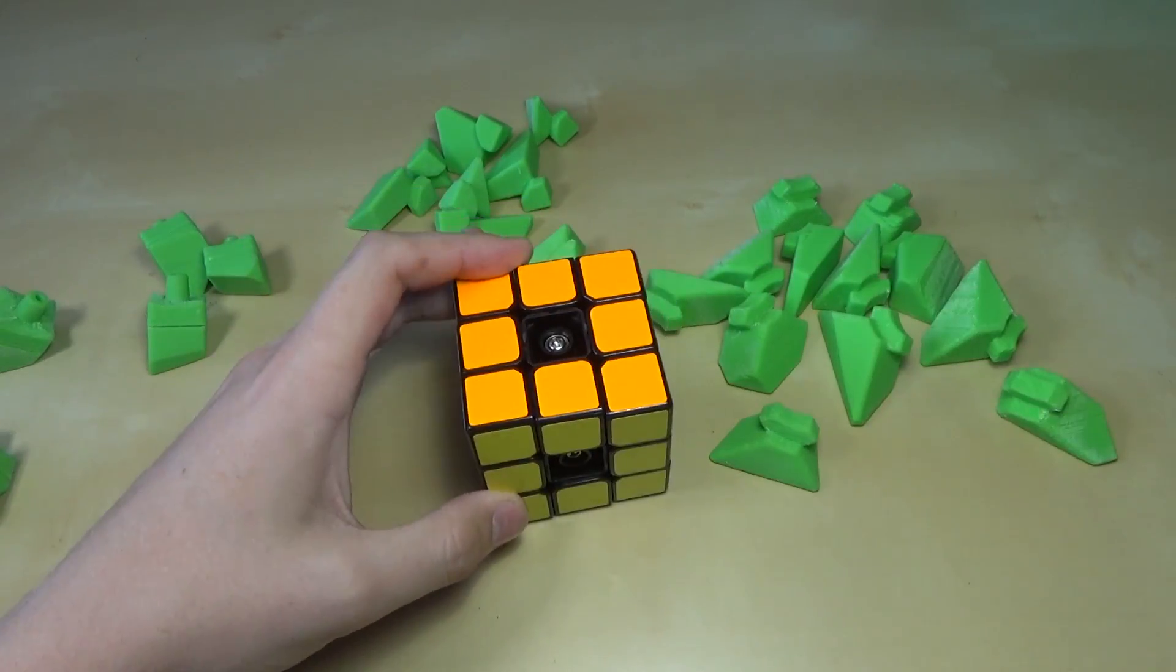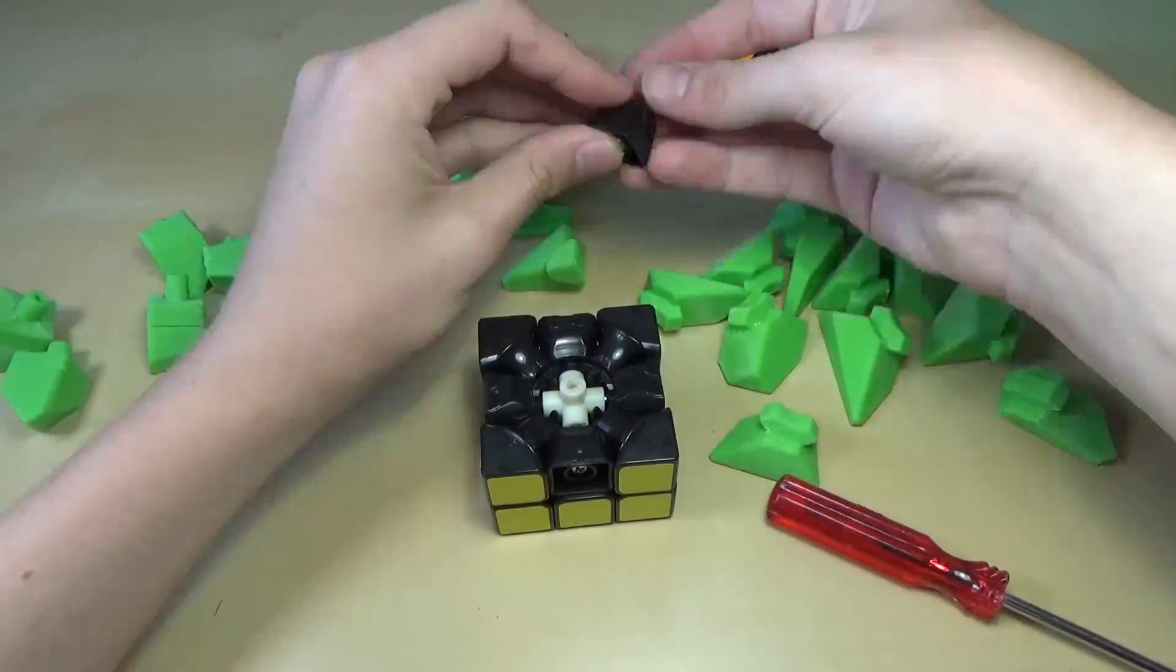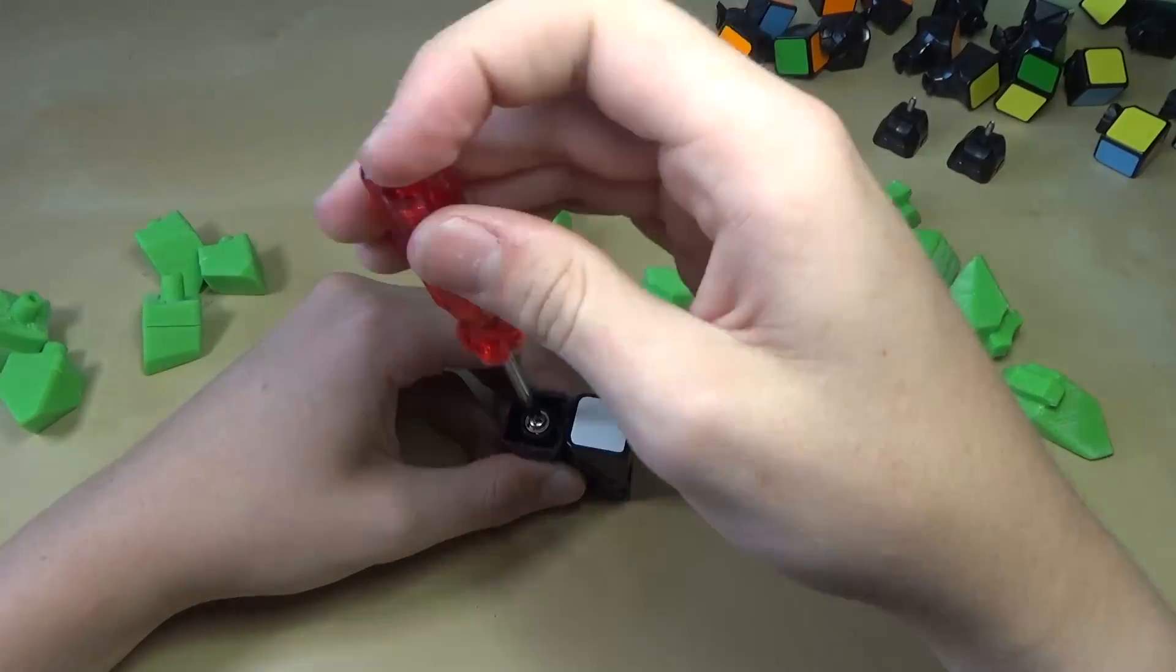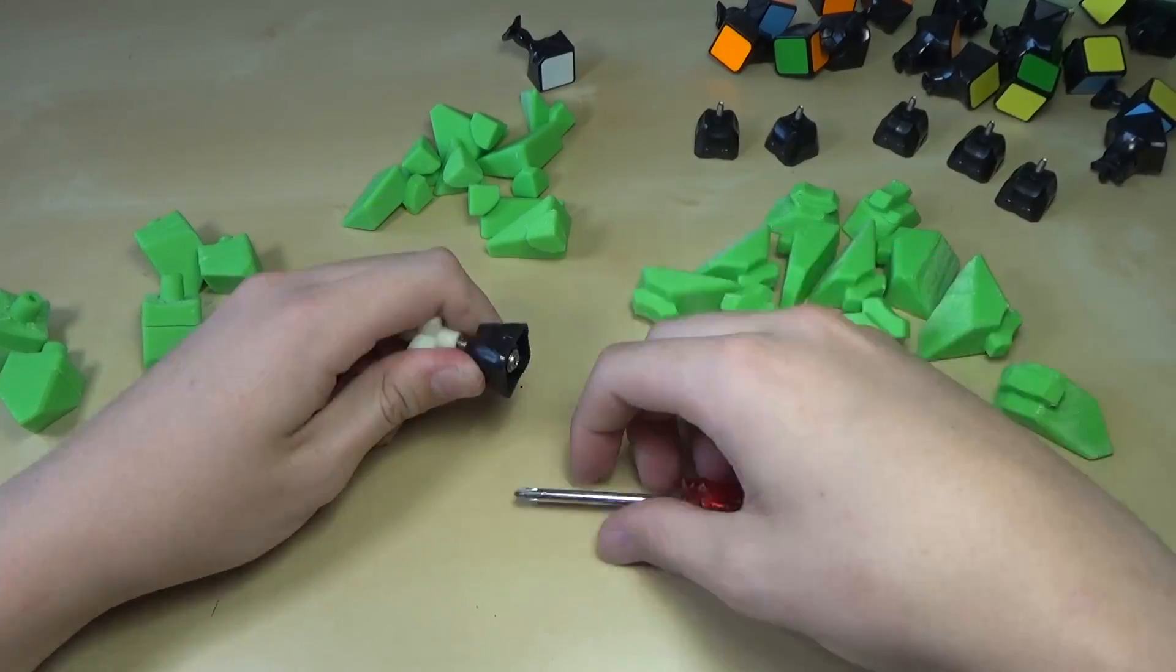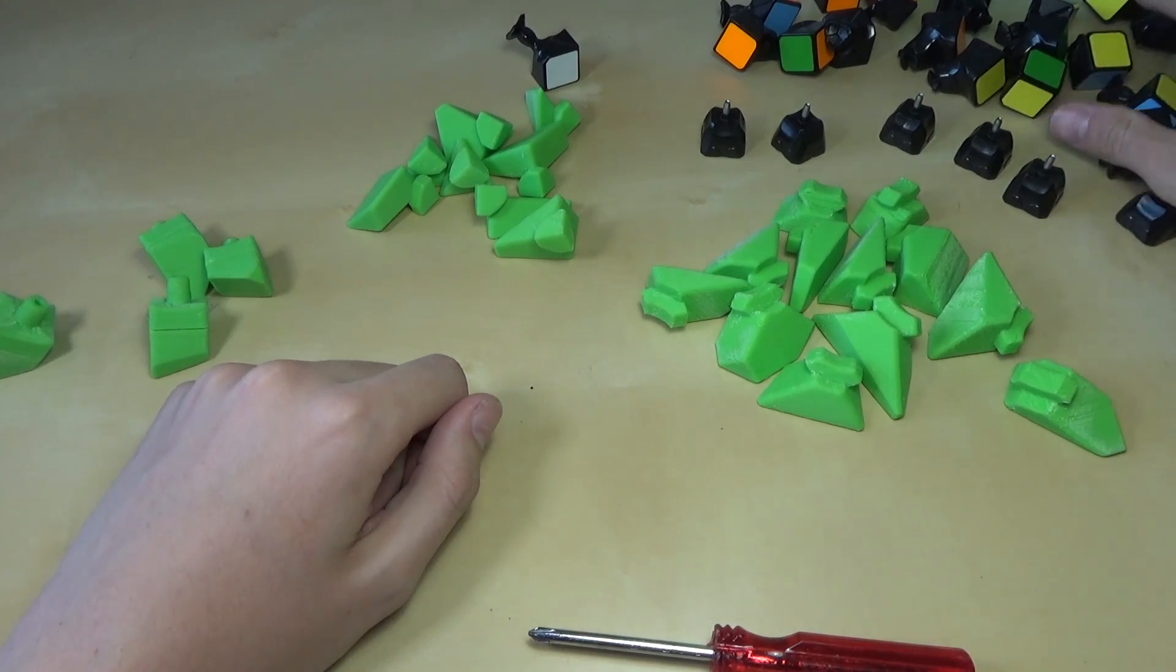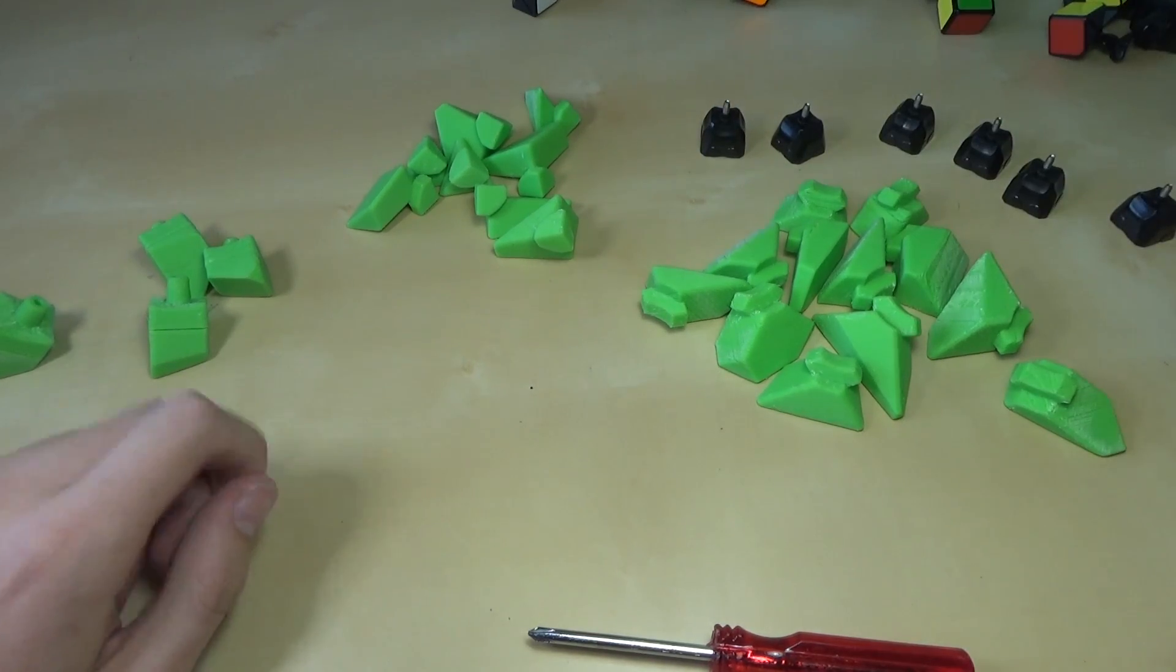First we'll take off all the center caps like I've done here and unscrew all the sides. Now we can move these pieces out of the way because we don't need them anymore, and we can begin to assemble the puzzle.